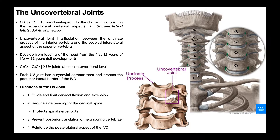Let's identify some of these vertebrae and maybe some associated structures. We're looking at an anterior view — we can tell that because of the mandible. This bone up here is C1, or the atlas, the first cervical vertebra. Below that we have C2, the axis, and then C3. Notice the floating bone, the hyoid, is usually situated between C2 and C3, but it's anterior to those.